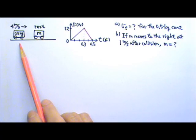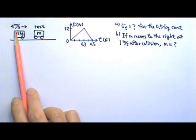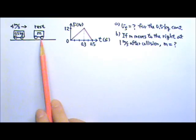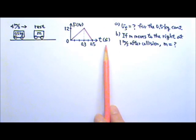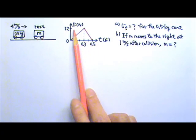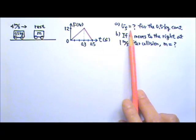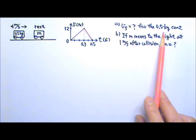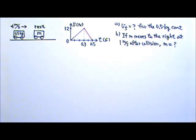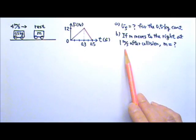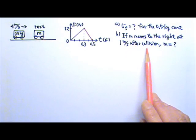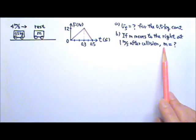A 0.5 kg cart moving to the right at 4 m/s collides with a second cart that is initially at rest. During the collision, the amount of force between the two carts is described by this force versus time graph. Find the velocity of the 0.5 kg cart immediately after the collision. Part B: if the second cart moves to the right at 1 m/s immediately after the collision, what is the mass of the second cart?